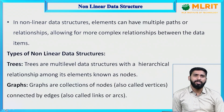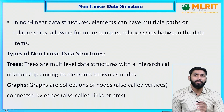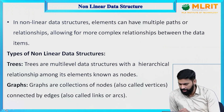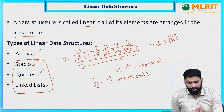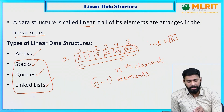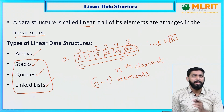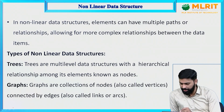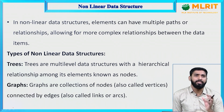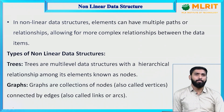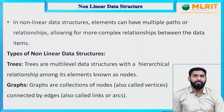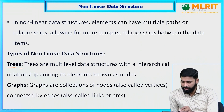In non-linear data structures, elements can have multiple paths or relationships, allowing for more complex relationships between data items. In a linear data structure, after 8 we traverse to 17, after 17 to 9 — each element is associated with a previous element and a next element. But in non-linear data structures, every element can have multiple paths and multiple relationships. Types of non-linear data structures are trees and graphs.